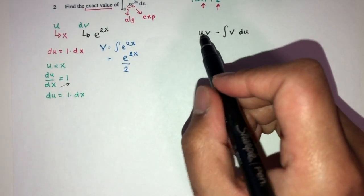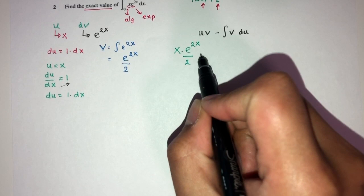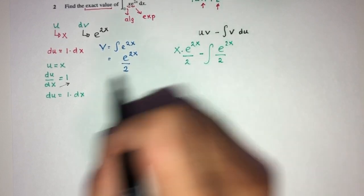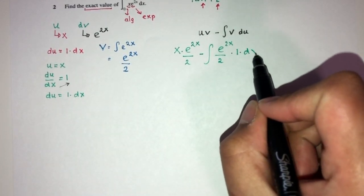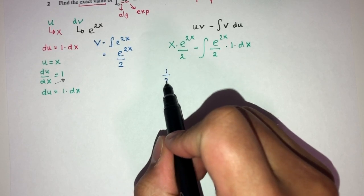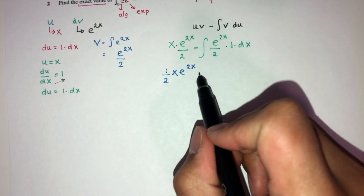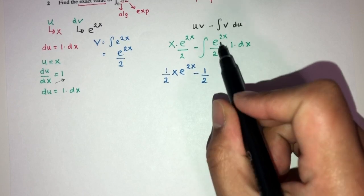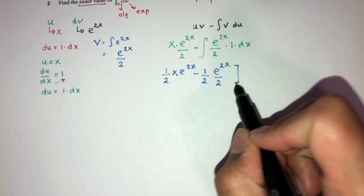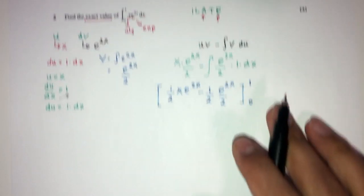Substituting: uv − ∫v du = x · (e^(2x)/2) − ∫(e^(2x)/2) · dx. Simplifying, this becomes (1/2)x · e^(2x) − (1/2)∫e^(2x) dx. Integrating the remaining term gives (1/2)x · e^(2x) − (1/4)e^(2x), evaluated with limits of integration from 0 to 1.